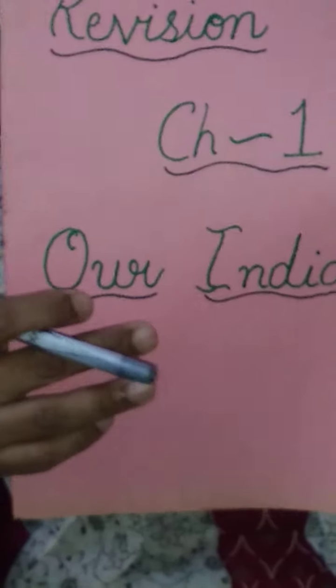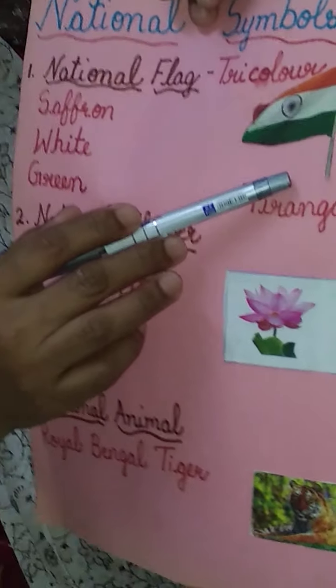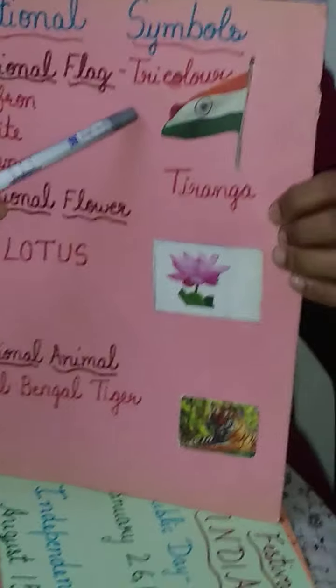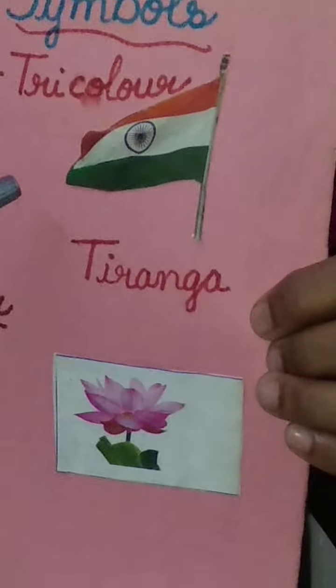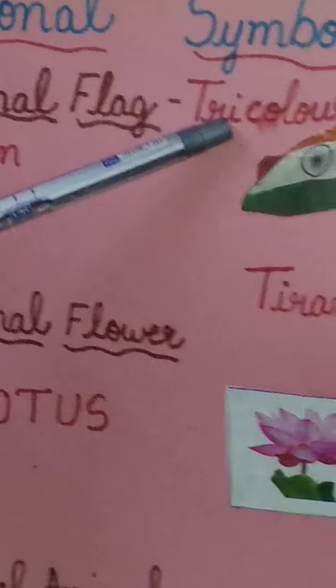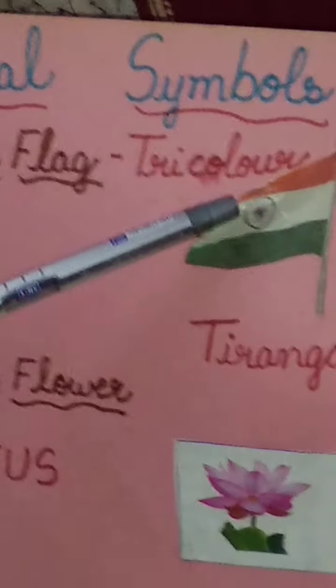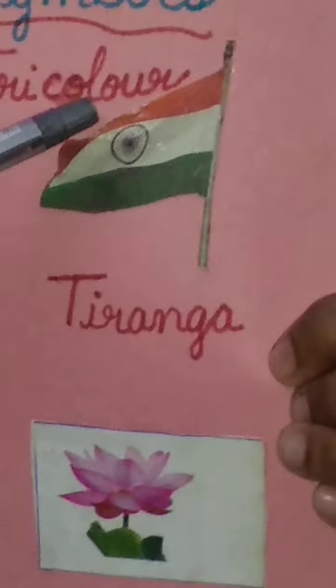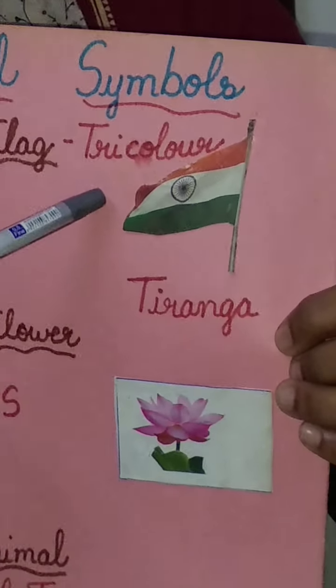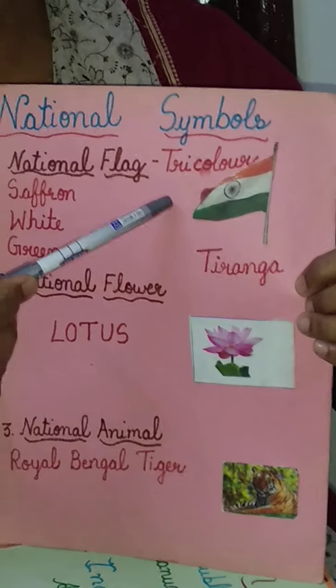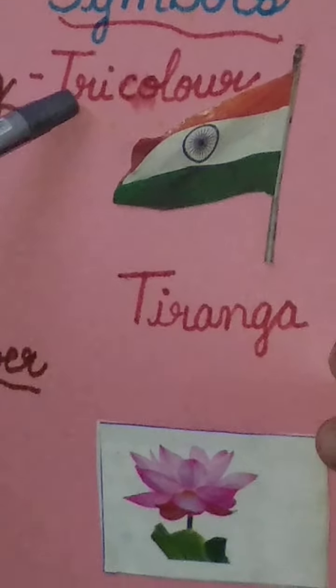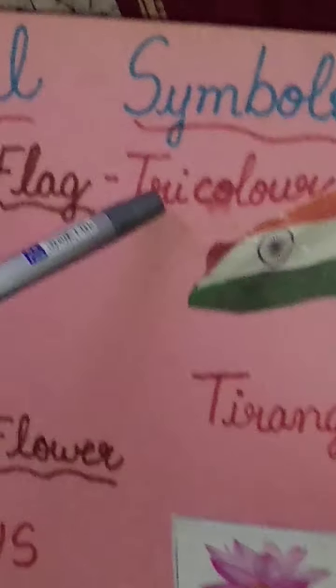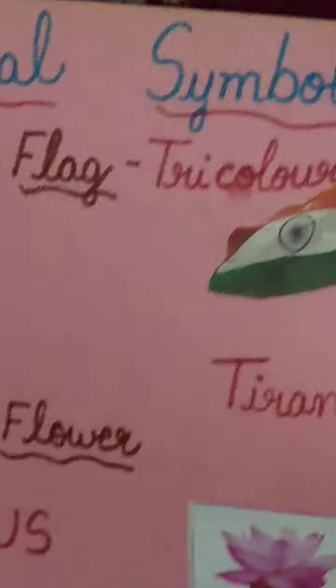What was the chapter name? Our India. Now children, can you tell me what is this? The national flag of India. How many colors are there in our national flag? There are three main colors: saffron, white and green. And there is a chakra which is blue in color and it has 24 spokes. Our national flag is also known as Tiranga or tri-color. Children, what is the meaning of the word 'tri'? It means three.